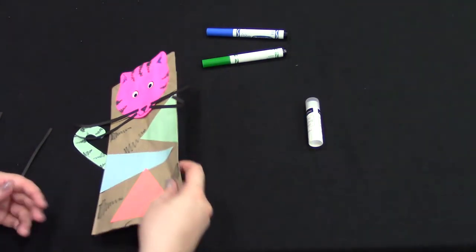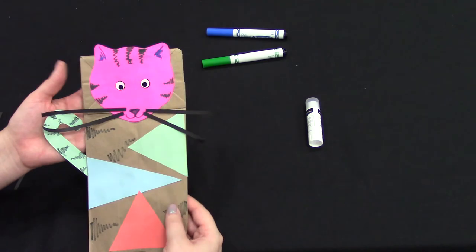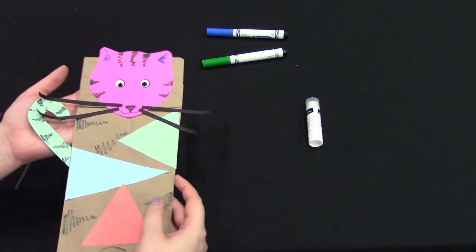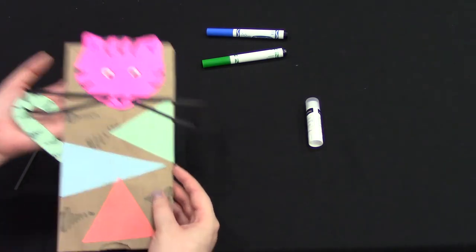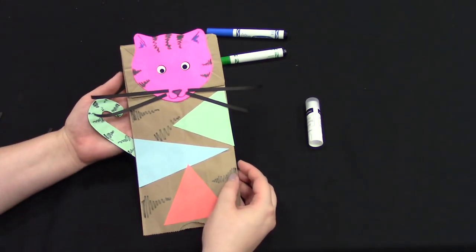So as you can see, I decided to only put on four whiskers for my tiger, but you can do as many as you want. And here you go. Here's the finished product.